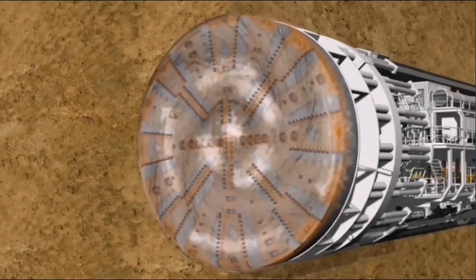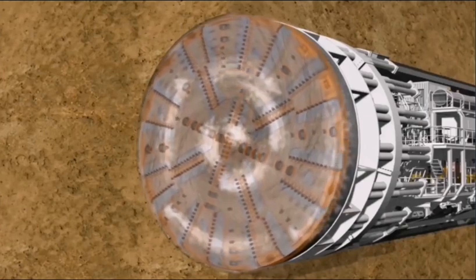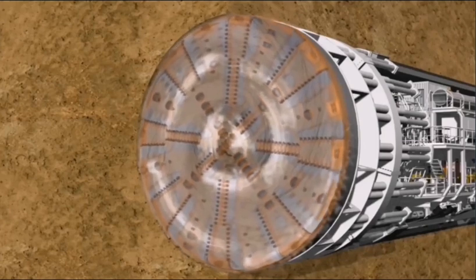With the help of nozzles integrated into the cutting wheel, the corresponding conditioning medium is injected into the soil, which is pressed into the excavation chamber by the existing earth and groundwater pressure.